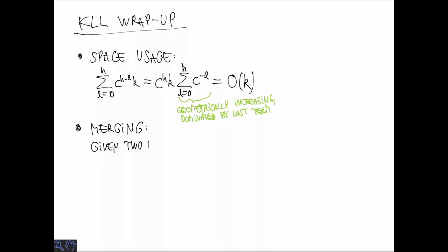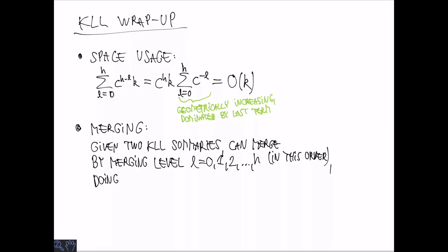KLL supports merging. So given two KLL summaries, we can merge them into a summary of the union of datasets. And merging pretty much works like insertion. So we push things up. So we start with level 0, merge the two buffers. If they overflow, we do a compaction and push up and so on. So that's merging.